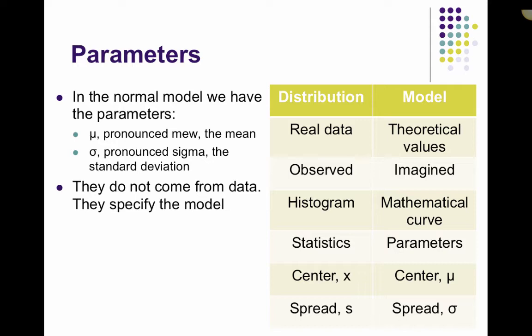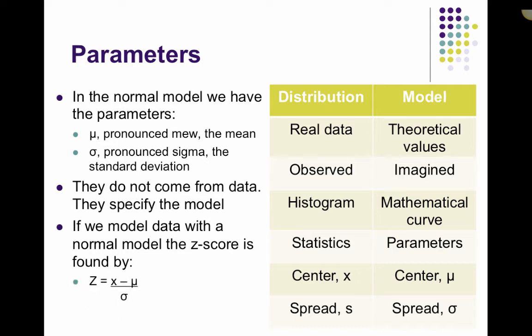Again, parameters do not come from the data, they just specify a model. If we model data with a normal model, the z-score is found using the same equation, but instead of x-bar we use mu, and instead of s we use sigma.